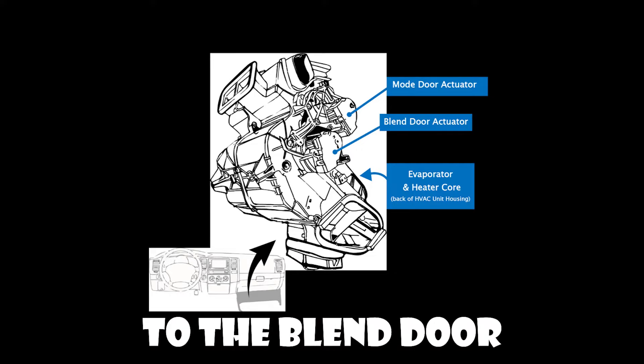Here are the top three symptoms of a bad blend door actuator. Number one: inconsistent cabin temperature. One of the most common symptoms of a bad blend door actuator is inconsistent cabin temperature. If the blend door actuator is malfunctioning, it may not be able to properly control the blend door's movement, resulting in an inability to maintain the desired temperature inside the cabin. You might notice that the air conditioning or heating doesn't seem as powerful as it should be, or that the temperature fluctuates without you adjusting the controls.